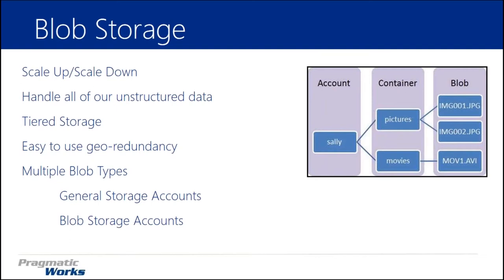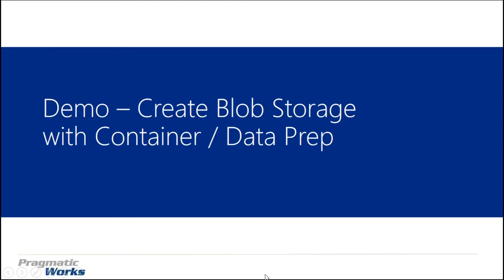What I love most about Azure is the geo-redundancy, and it's easy to set up geo-redundancy with respect to our blob storage. We have multiple blob types: general storage accounts — which we're talking about today — and blob storage accounts, which allow us to do cold and hot tiering. We can easily append to them. On the right-hand side of the screen you can see your account, and within your blob storage account you'll have containers — here showing 'pictures' and 'movies' — and then your blobs, the data stored within your blob storage account.